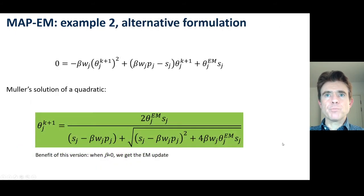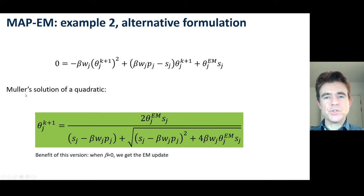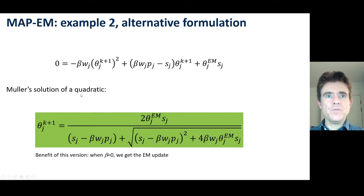The problem with that expression is that if you set beta equal to zero, you get a very bad solution — it blows up completely. So instead, we use Müller's solution of a standard quadratic form, which is just an alternative expression for finding the solutions to a quadratic.